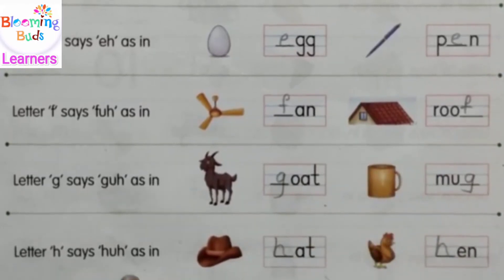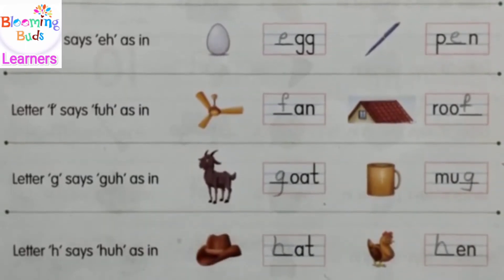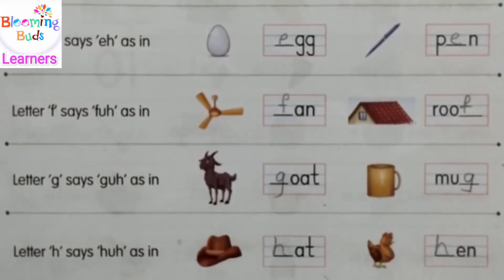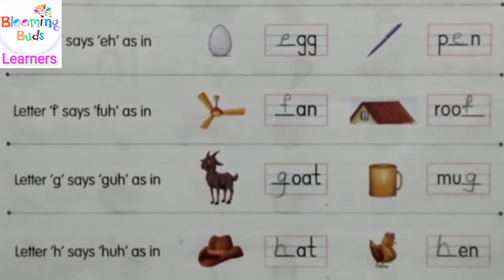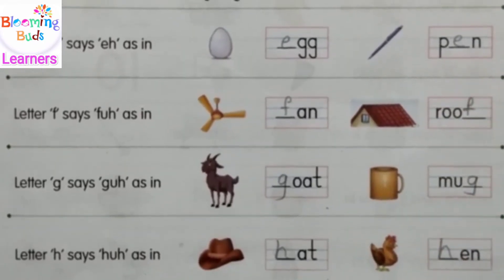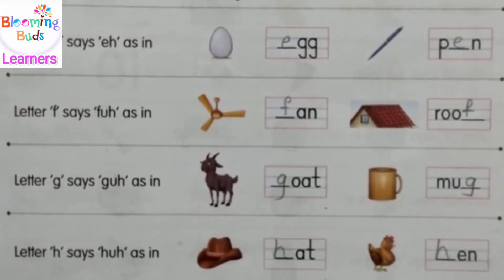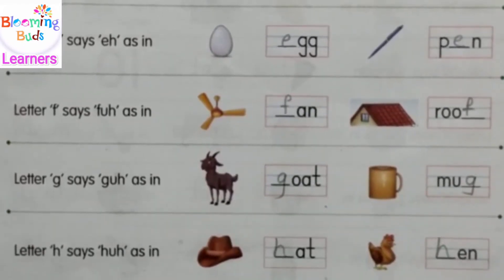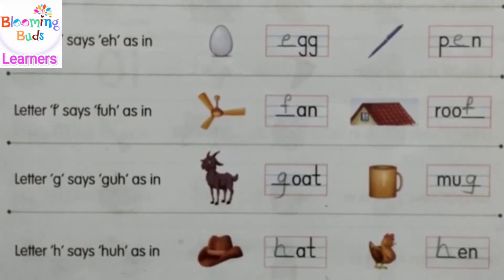Letter H says 'h'. It is not a full 'her' sound — it is just 'h', 'h'. It is not the complete 'her' sound. As in hat, hen. Hat, hen.